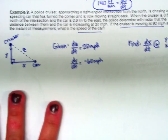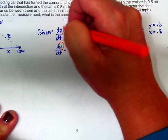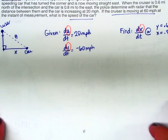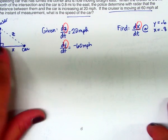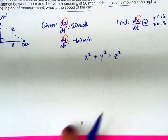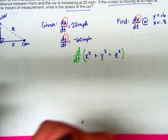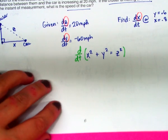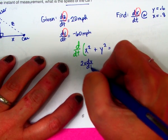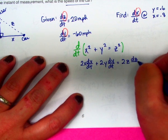All right, so now I can go ahead and think about my variables, and I need to relate. Of course, I have X and Y and Z. So this is the first time that we have all three variables to relate. And it's going to be just a simple Pythagorean theorem. X squared plus Y squared does equal Z squared. And I'm going to differentiate that with respect to time.